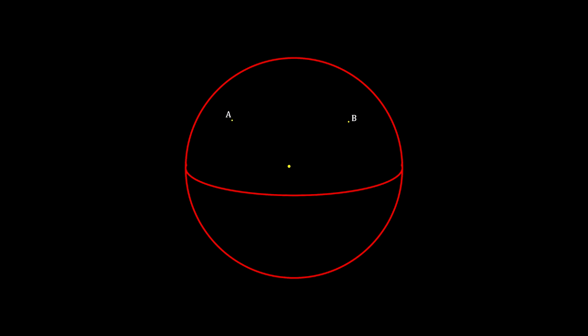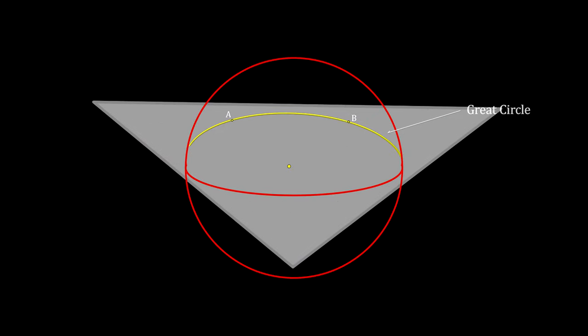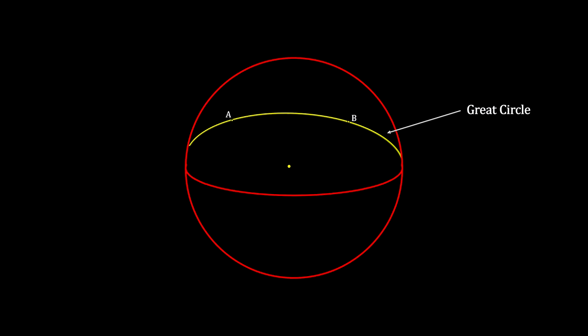Remembering that three points define a plane, here is the best way to find the geodesic between two points on the surface of a sphere. First, draw the triangular plane defined by these two points plus the center of the sphere. Then extend it to intersect the sphere's surface. The intersection creates a line around the sphere called the Great Circle. The portion between the two points is the geodesic, the shortest line on the surface connecting the two points.